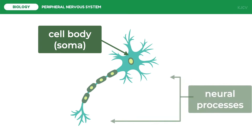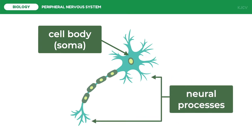The nucleus and organelles are housed in the cell body or soma. The neural processes are the extensions of the neuron that serve as passageways of signals. There are two kinds of neural processes depending on the direction of the signal. Numerous extensions of the soma are known as dendrites, which typically project like antennae to increase the surface area available for receiving signals from other neurons.